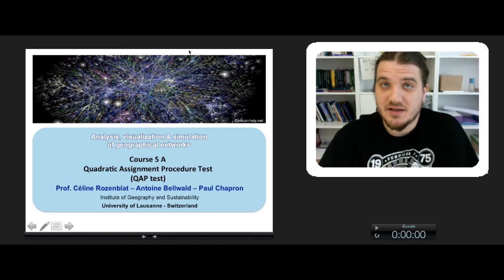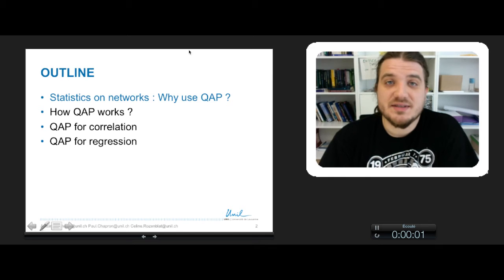This is basically a technique to make some correlation tests on network data. In this course we will see why the statistics on networks is different from the classical statistics on population, and how the QAP test works, and how we can use it for QAP regression or QAP correlation.